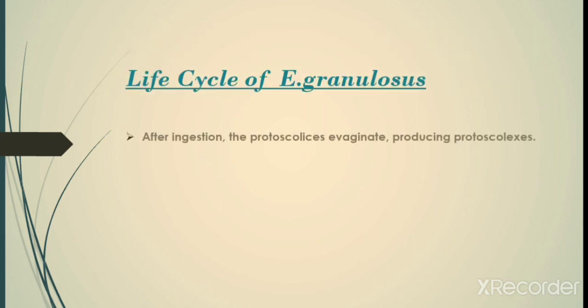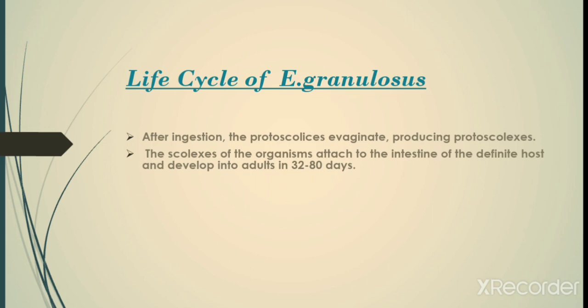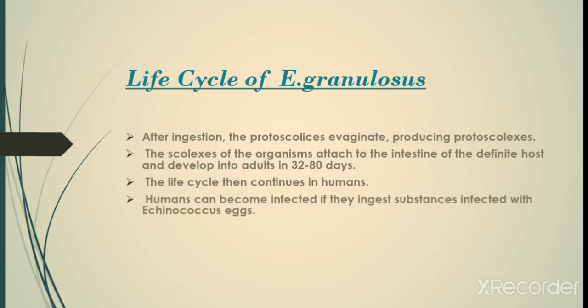The life cycle of Echinococcus granulosus: after ingestion, the protoscoleces evaginate, producing protoscoleces whose scolices attach to the intestine of the definitive host and develop into adults in 32 to 80 days. The life cycle then continues in humans — humans can become infected if they ingest substances contaminated with Echinococcus eggs.